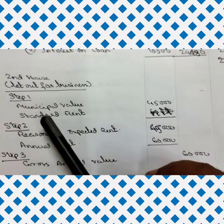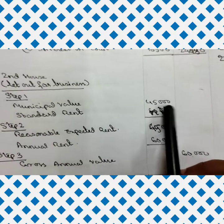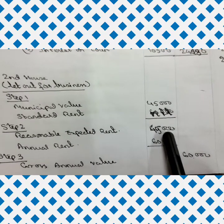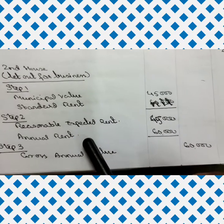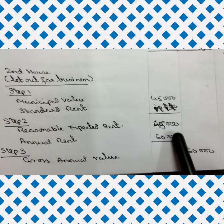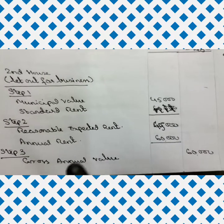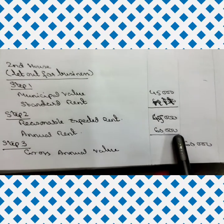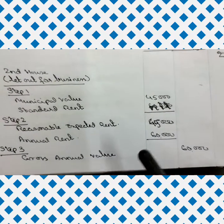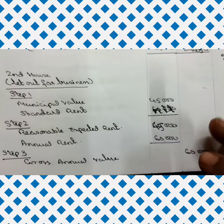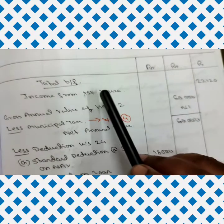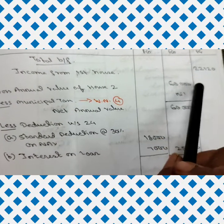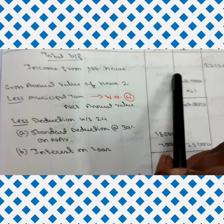Now for the second house, let out for business. Step 1: municipal value is 45,000. Since there is no standard rent, in Step 2 the reasonable expected rent is the municipal value itself, i.e., 45,000. Rent received is 60,000 with no vacancy period, so annual rent is 60,000. Gross Annual Value is 60,000 — the higher of Step 2 and annual rent.